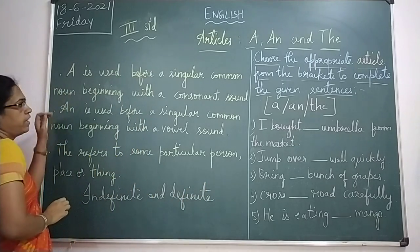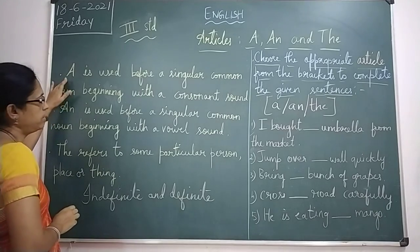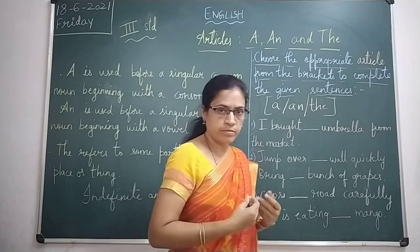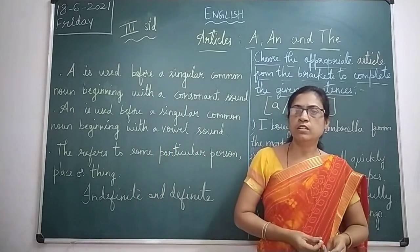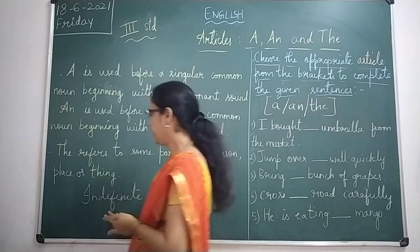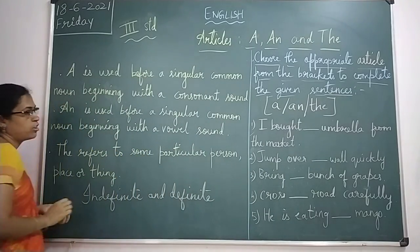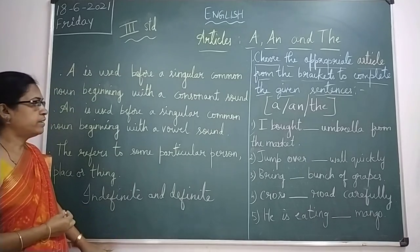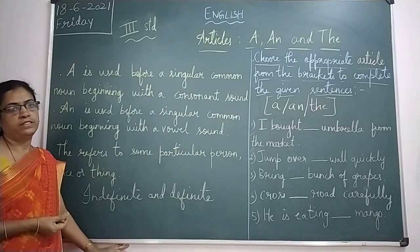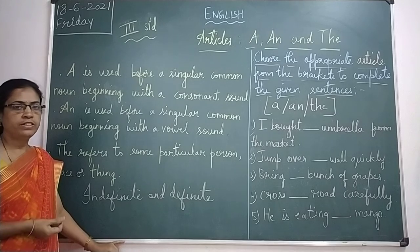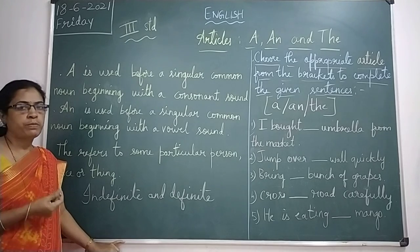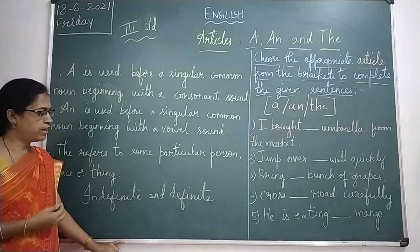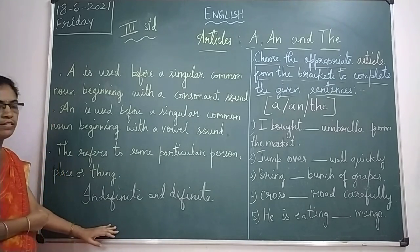Articles 'a' and 'an' are indefinite articles, as they do not refer to any particular person or thing. 'The' is the definite article because we speak of some particular person or thing. So 'the' is the definite article, and 'a' and 'an' are indefinite articles.